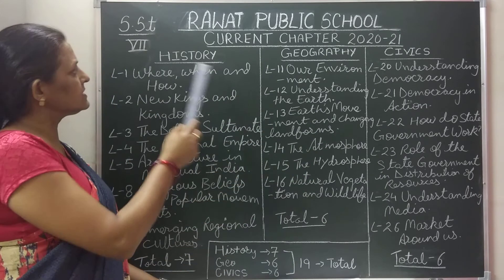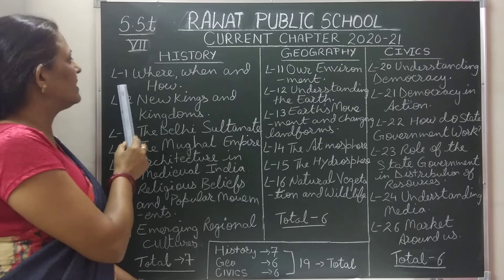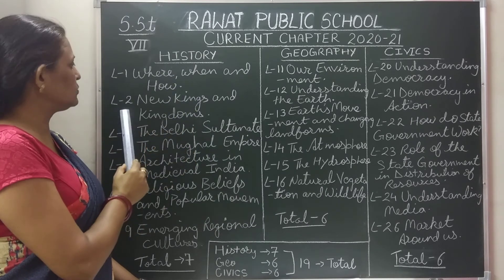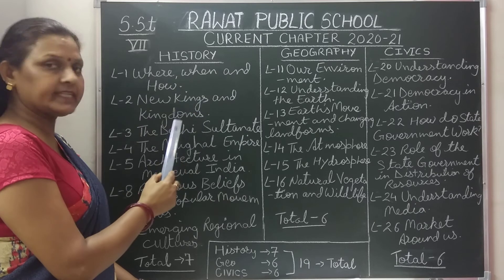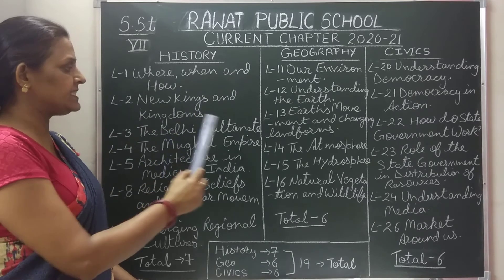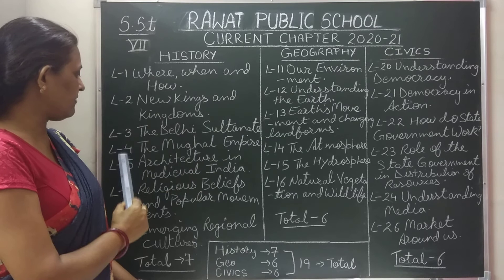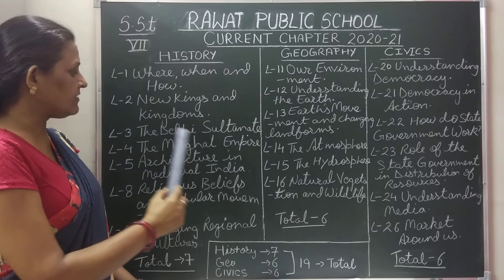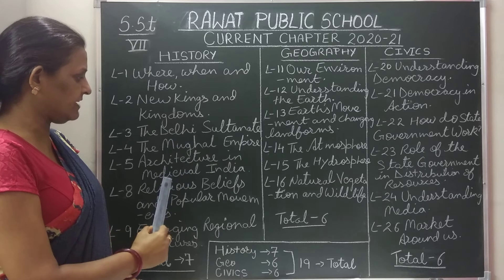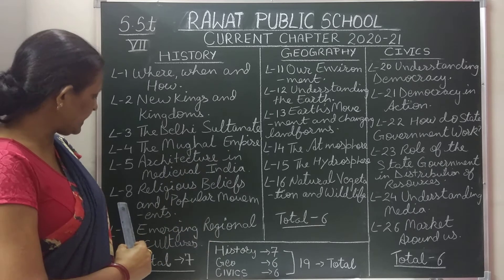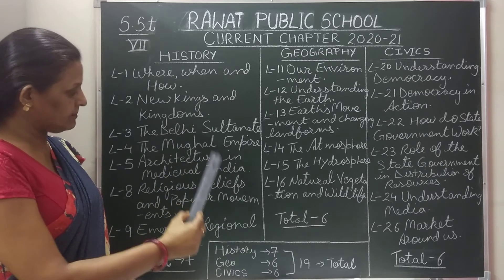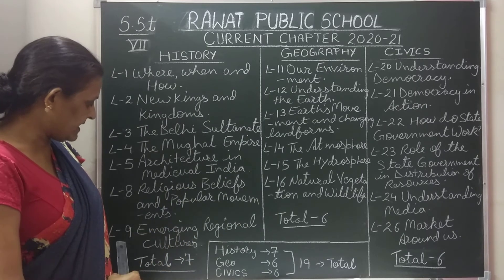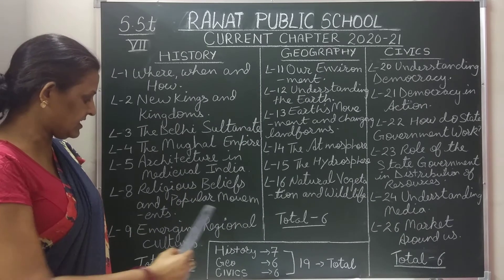First, history. Lesson number 1: Where, When and How. Lesson number 2: New Kings and Kingdoms. Lesson number 3: The Delhi Sultanate. Lesson number 4: The Mughal Empire. Lesson number 5: Architecture in Medieval India. Lesson number 8: Religious Beliefs and Popular Movement. Lesson number 9: Emerging Regional Culture.